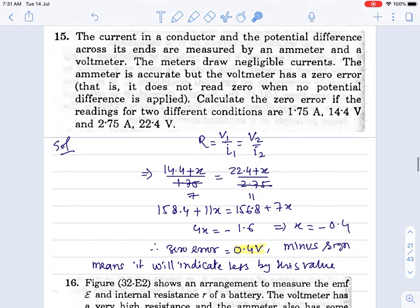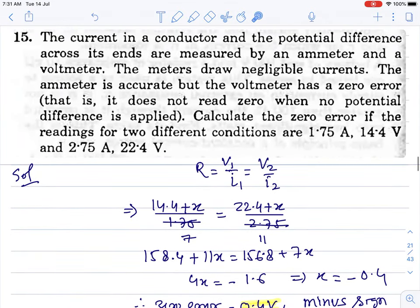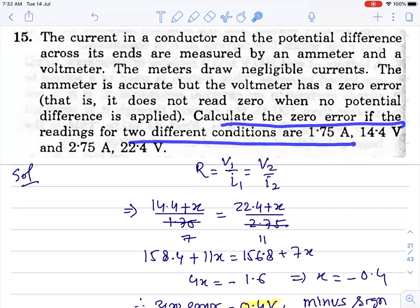Moving on to the next question. The current in the conductor and potential difference across the ends are measured by the ammeter and voltmeter. The ammeter draws negligible current. The ammeter is accurate but voltmeter has zero error. That is it doesn't read zero when no potential difference is applied. So it can indicate more, say one volt when no potential difference is applied, or it can show minus one volt. Both possibilities exist.